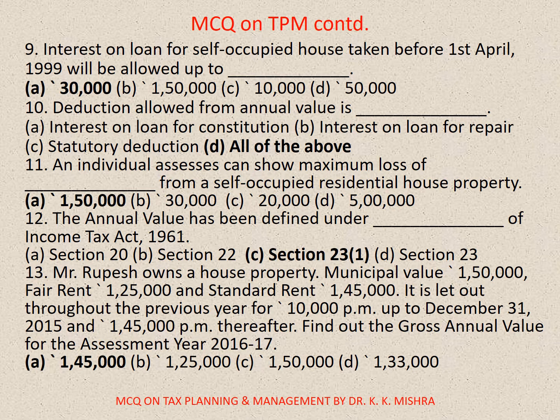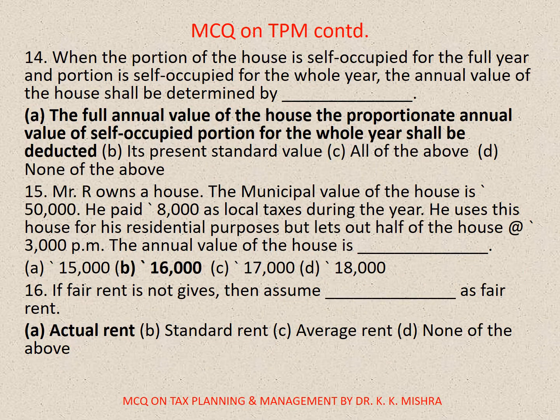Question number 13: Mr. Rupesh owns a house property. Municipal value: 1,50,000; Fair rent: 1,25,000; Standard rent: 1,45,000. It is let out throughout the previous year for 10,000 per month up to December 30, 2015 and 1,45,000 per month thereafter. Find out the gross annual value for assessment year 2016-17. Correct option is A: 1,45,000.